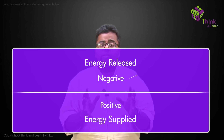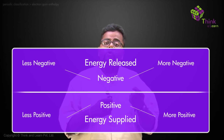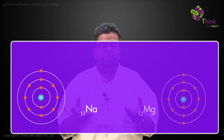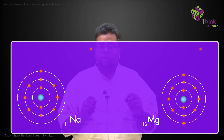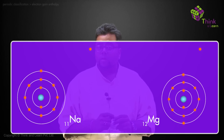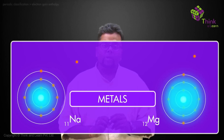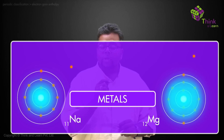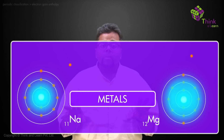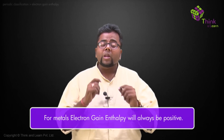So there are four terms: more negative, less negative, more positive, or less positive. Now let's say we have sodium and magnesium. If we want to add an electron to each, will the electron gain enthalpy have a positive or negative value? Sodium and magnesium are both metals, and since they are metals they would not want to take an electron. So they will oppose the addition of an electron, meaning we would have to give energy to add an electron to either one. So for metals, the electron gain enthalpy can never have a negative value — it would always be positive.